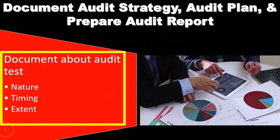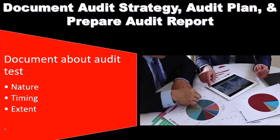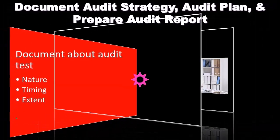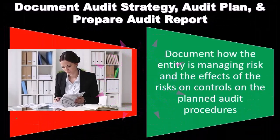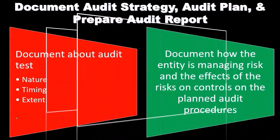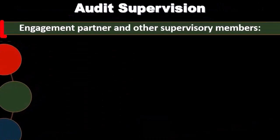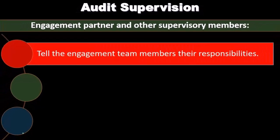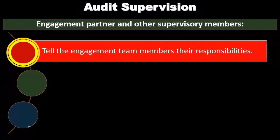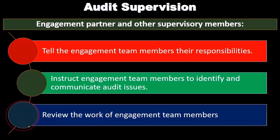We will document the audit strategy, audit plan, and audit reports — including audit tests covering the nature, timing, and extent. Documentation should also address how the entity is managing risk and the effects of risk on controls and the planned audit process. The engagement partner and other supervisory members should instruct engagement team members on their responsibilities, direct them to identify and communicate audit issues, and review the work of engagement team members.